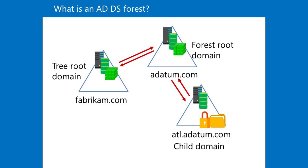Replication boundary. An ADDS forest is the replication boundary for the configuration and schema partitions in the ADDS database. As a result, all the domain controllers in the forest must share the same schema. Organizations that want to deploy applications with incompatible schemas need to deploy additional forests. The ADDS forest is also the replication boundary for the global catalog. The global catalog makes it possible to find objects from any domain in the forest — for example, when user principal name (UPN) sign-in credentials are used or when Microsoft Exchange Server address books are used to find users.